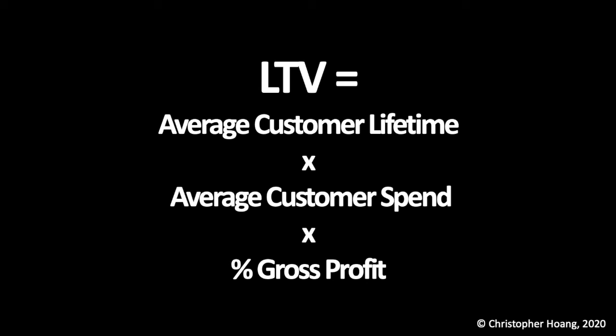This is the power of using the lifetime value metric — it's going to lead you to make decisions about how to reward loyal customers through loyalty programs. This is actually how companies such as Starbucks calculate how to set up their Stars program, or companies like HBC and President's Choice set up their points programs. This is calculated by multiplying the average customer lifetime by the average customer spend by the percent of gross profit on average.